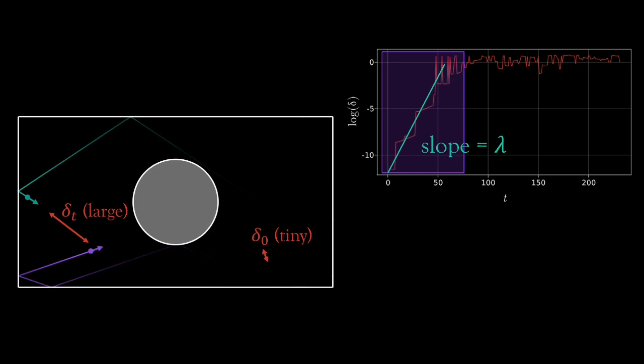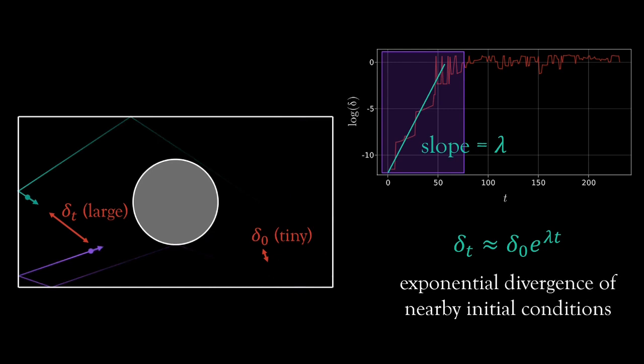this means that the distance itself is increasing with an exponential rate. This is called exponential divergence of nearby trajectories and it is just another way to say sensitive dependence on initial conditions or the butterfly effect.